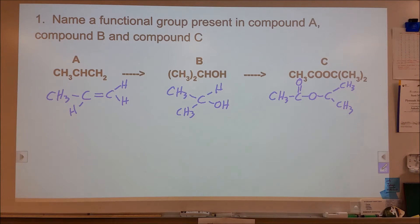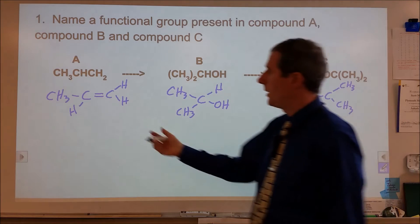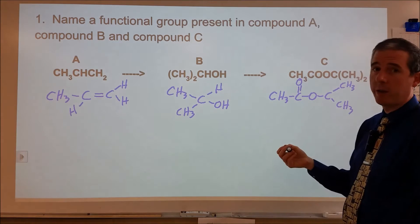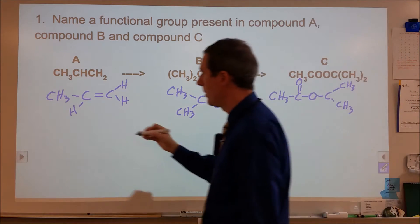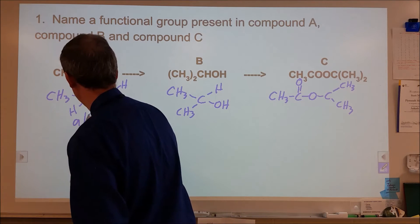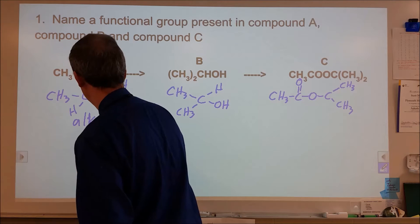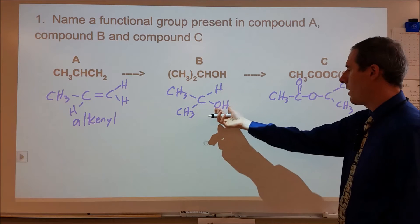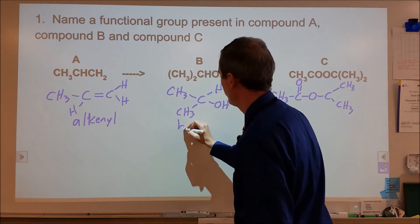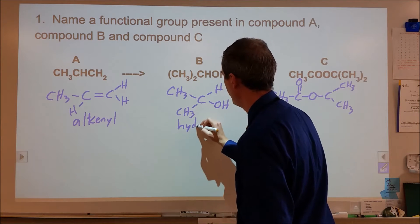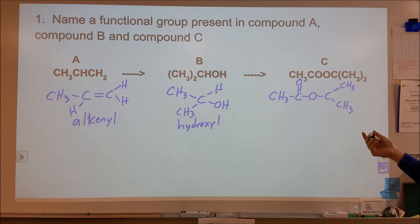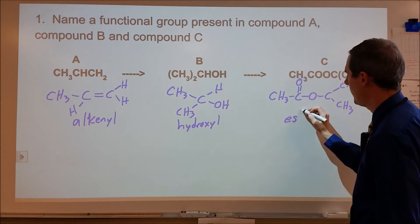For the functional groups present: compound A belongs to the class called alkenes, and the functional group is called an alkenal. Compound B is an alcohol as a class, and the functional group is called a hydroxyl group. Compound C belongs to the class of esters, and its functional group would be an ester.